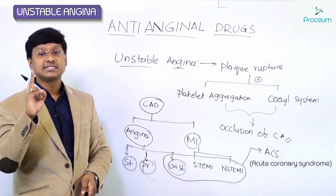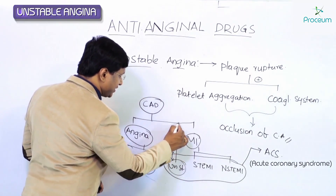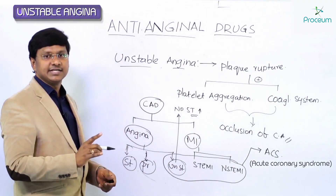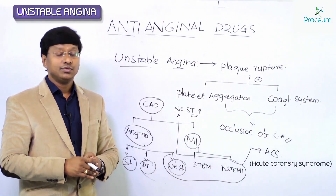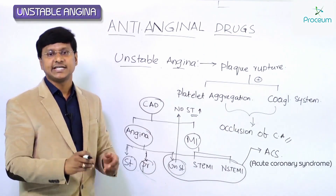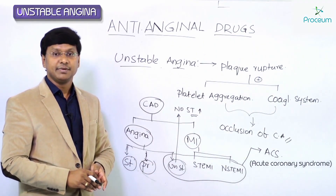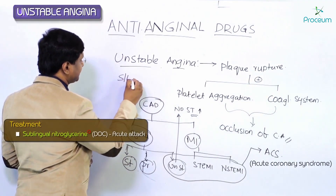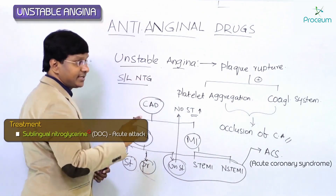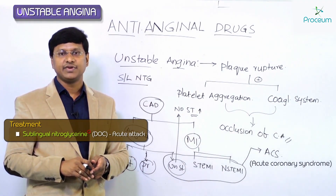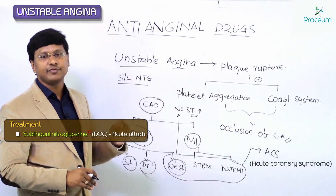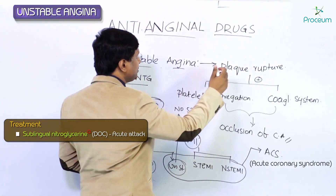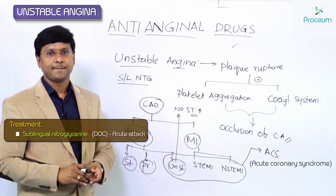Remember, in unstable angina there is no ST elevation. Now, in unstable angina, if there is an acute attack, the treatment of choice is sublingual nitroglycerin. Just as in stable angina, if the individual has an acute attack, we give sublingual nitroglycerin in unstable angina as well.